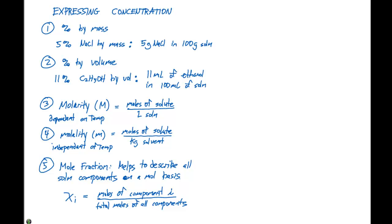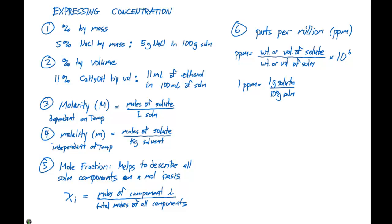The next two concentration units that we'll see are parts per million, abbreviated ppm. A part per million is going to be equal to either the weight or volume of solute divided by the weight or volume of the solution, and we need to take this and multiply by 10 to the sixth. One part per million equals one gram of solute per 10 to the sixth grams of solution, and this is also equivalent to one milligram of solute per liter of solution.